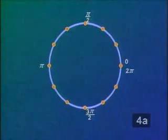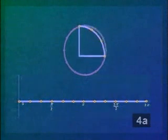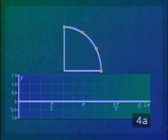To graph the function F of theta equals sine theta, we can take the circle and unravel it to use as our horizontal axis. Notice then that the X-axis is now labeled with angle measures. Because of this, we will not call it the X-axis, but the theta axis.